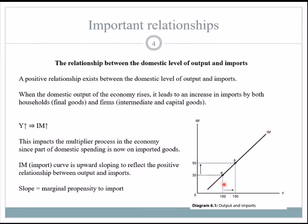The slope of the import curve is the marginal propensity to import — the additional unit of imports for each increase in Y. So as output increases by 50, imports might increase by 20 in this example. The marginal propensity is just the additional marginal bit you get from an increase in the X variable.